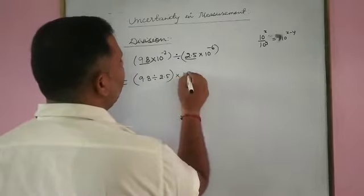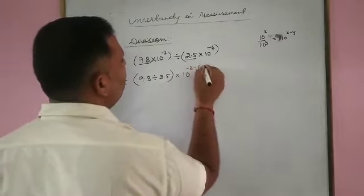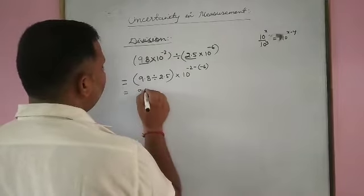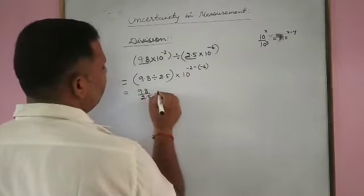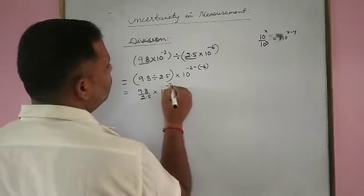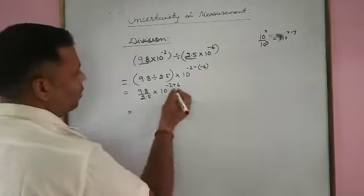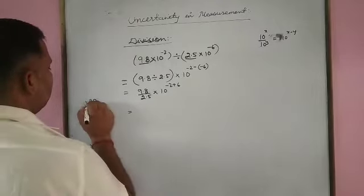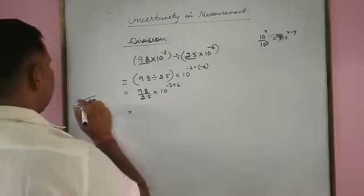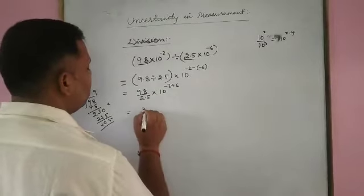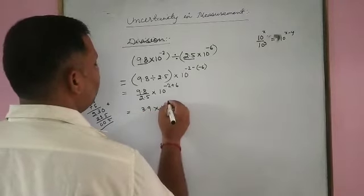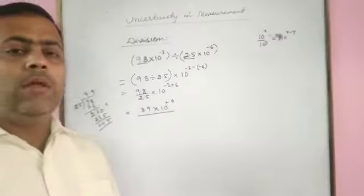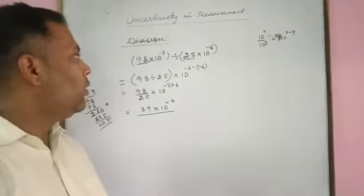This equals 10 to the power minus 2 minus minus 6. So dividing the digit terms gives 9.8 by 2.5, and the exponent becomes 10 to the power minus 2 plus 6. The digit result is 3.92, giving 3.9 into 10 to the power plus 4. This is how we can divide by carrying scientific notation.